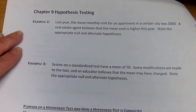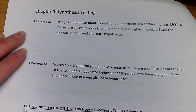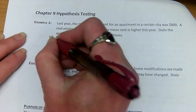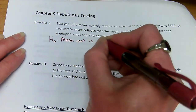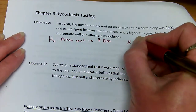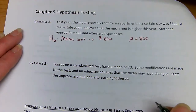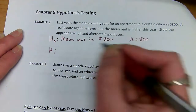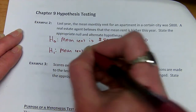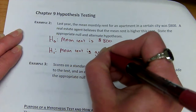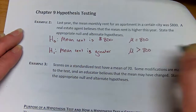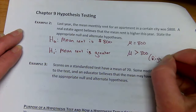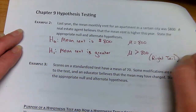Last year the mean monthly rent for an apartment in a certain city was $800. That gives the null hypothesis that the mean rent is $800. A real estate agent believes that the mean rent is actually higher this year, so the alternative is that the mean rent is greater than $800 — mean is greater than 800. This would be considered a right-tail test.